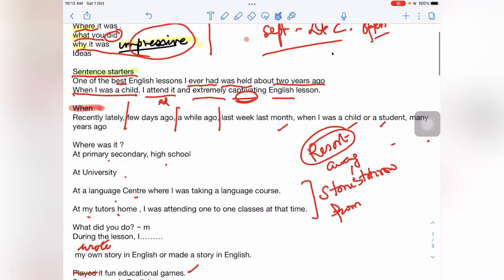Or you can say, when I was a child, I attended it - it should be attended it, not attended - and it was extremely captivating English lesson. There are some things missing. So please pay attention. It was extremely captivating. Captivating means very interesting which you were enraptured. Yes, you can use enraptured also. You were enraptured by the English lesson. See, this is how you can start your cue card. This is the starting.